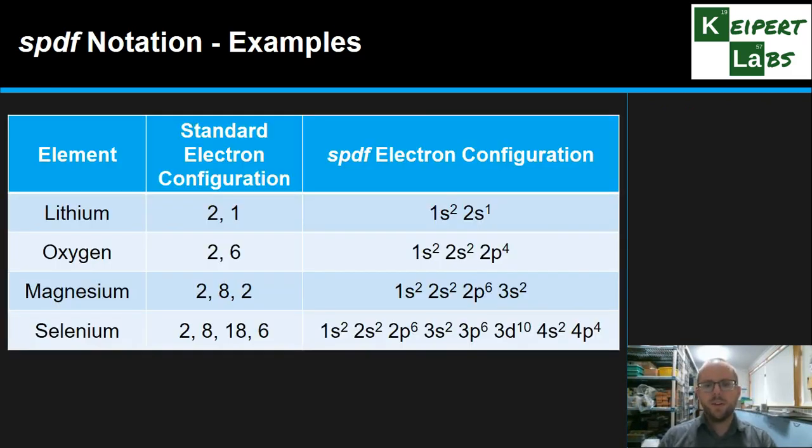Okay, and so some other examples. Think about lithium, which was 2 and 1, we can now put it as 1S2, 2S1. Oxygen, 1S2, 2S2, 2P4, and so on through these other examples.